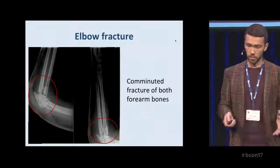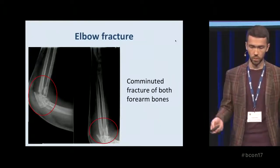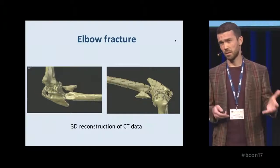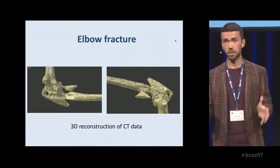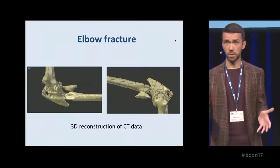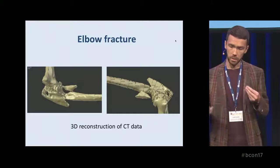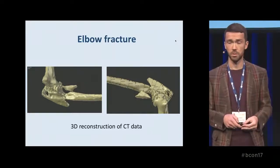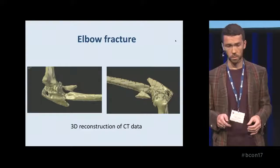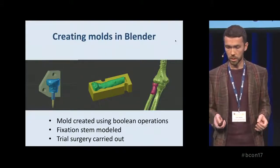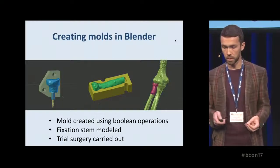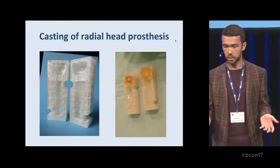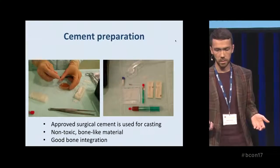The other clinical case: a severe elbow fracture — a comminuted fracture of both forearm bones. We made a 3D reconstruction. If you're looking at this and thinking you don't really understand what it is, you're not the only one — many surgeons reviewing X-rays and CT scans don't have the full picture, and interesting findings emerge during surgery. This has to be carefully planned. We made a mold in Blender, modeled a fixation stem to hold the implant in place, tried the surgery virtually, then printed the mold and cast the prosthesis.